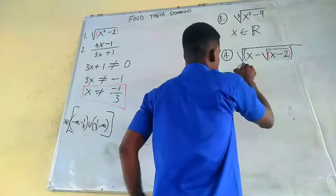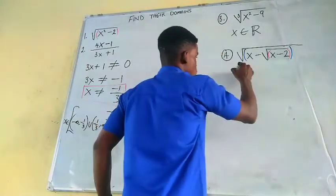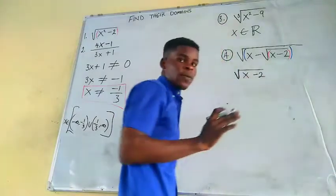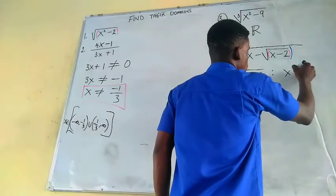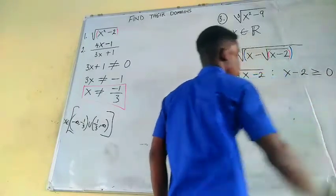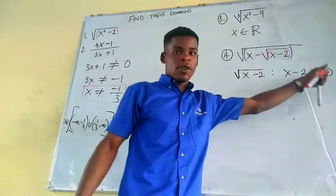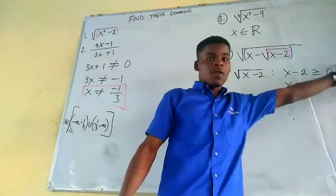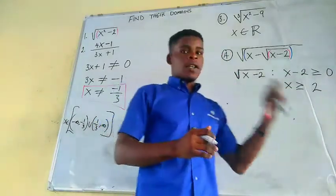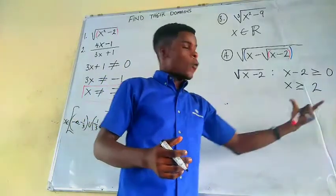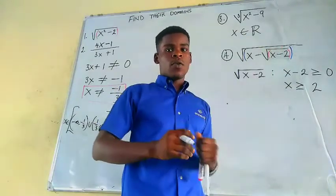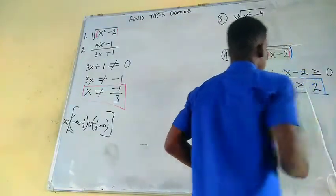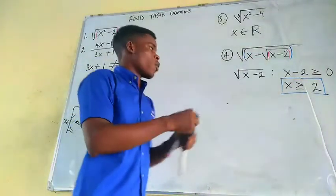Starting with the inner square root: x minus two must be greater than or equal to zero. This means x should be greater than or equal to positive two — simply add two to both sides of the inequality. So x ≥ 2 ensures the inner square root is defined.